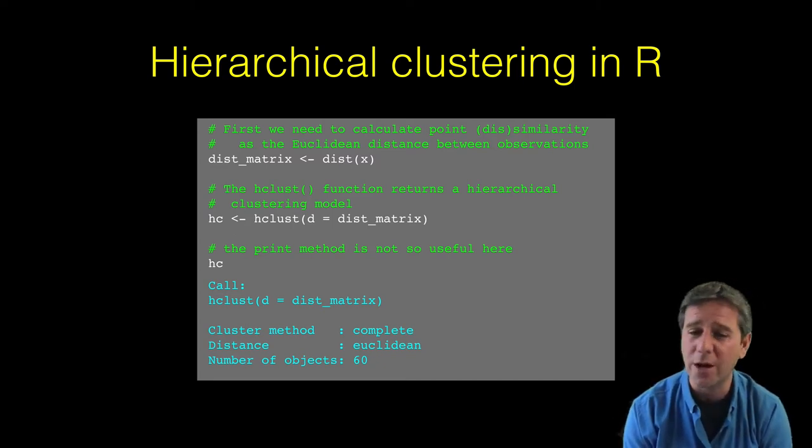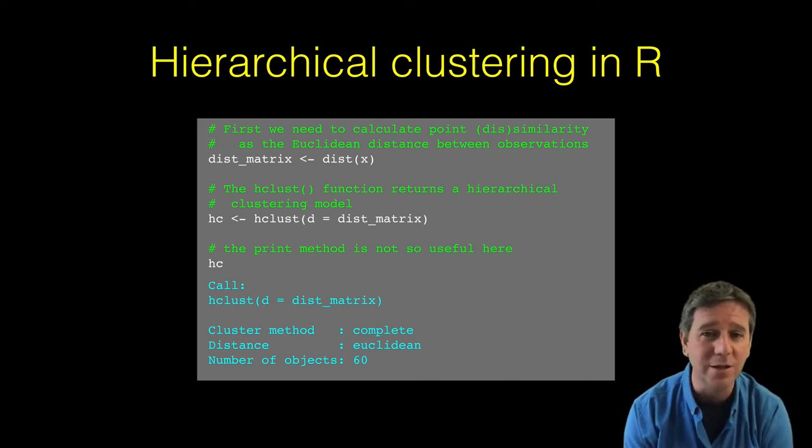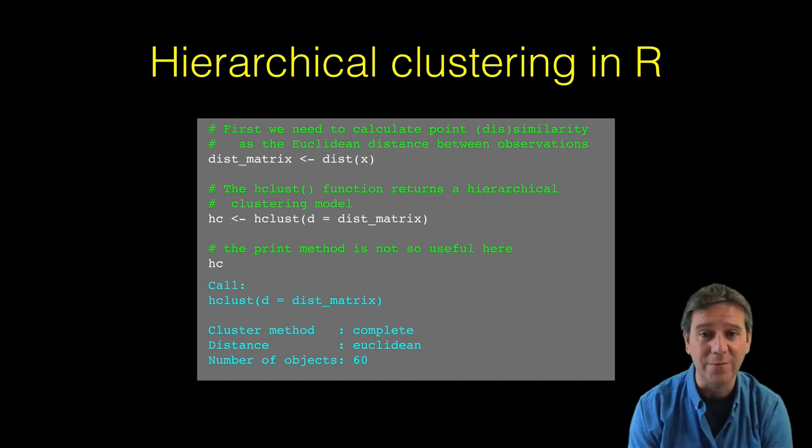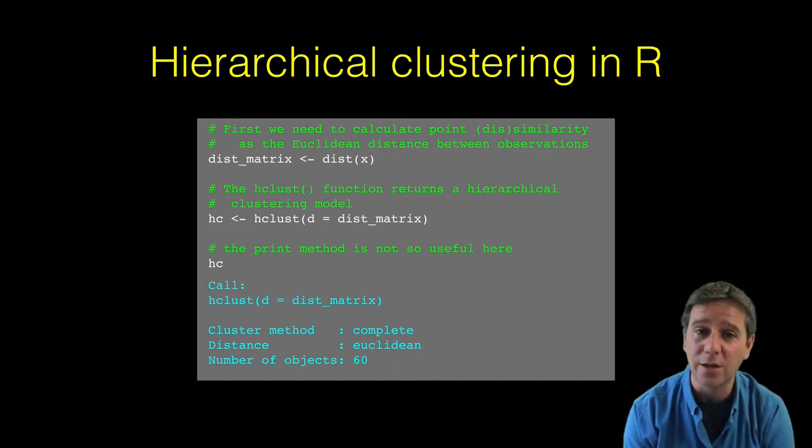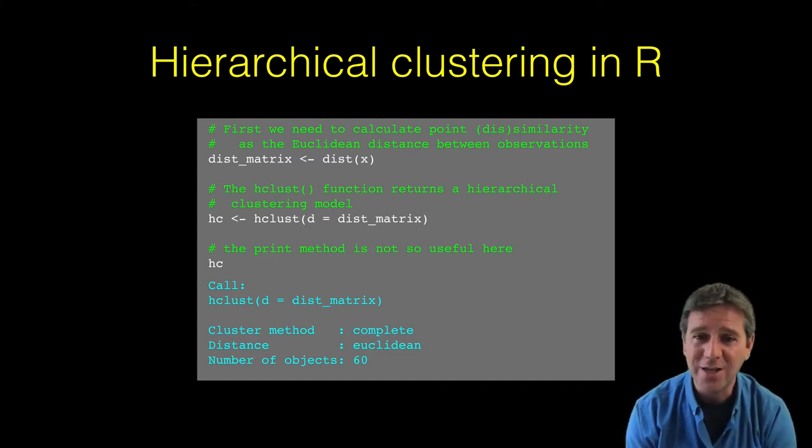We could use any measure of distance or similarity, such as sequence similarity or RMSD root mean squared distance for protein structures, or any other method of measuring distance between your data. That will be given as a square matrix as input to the hclust function.